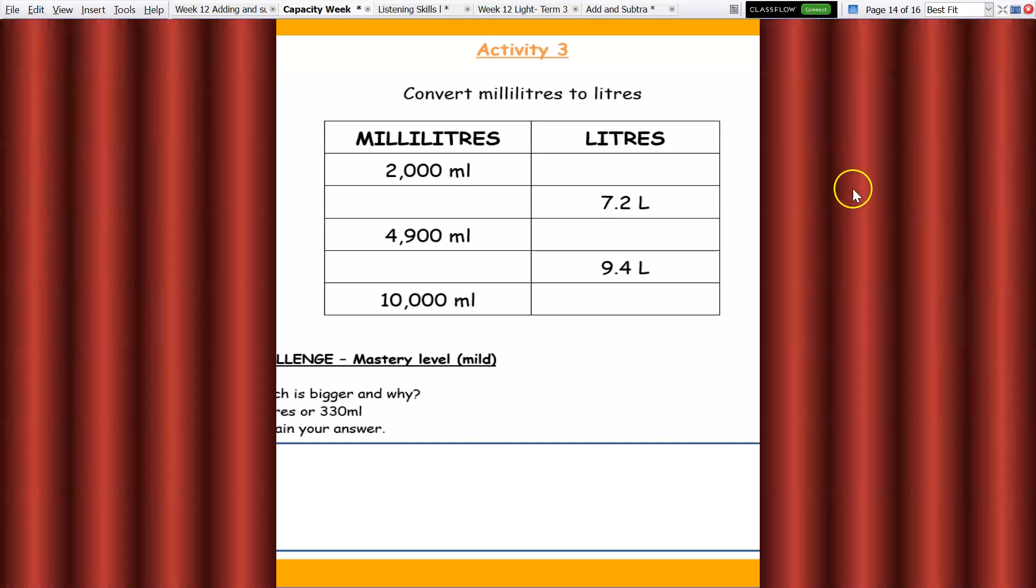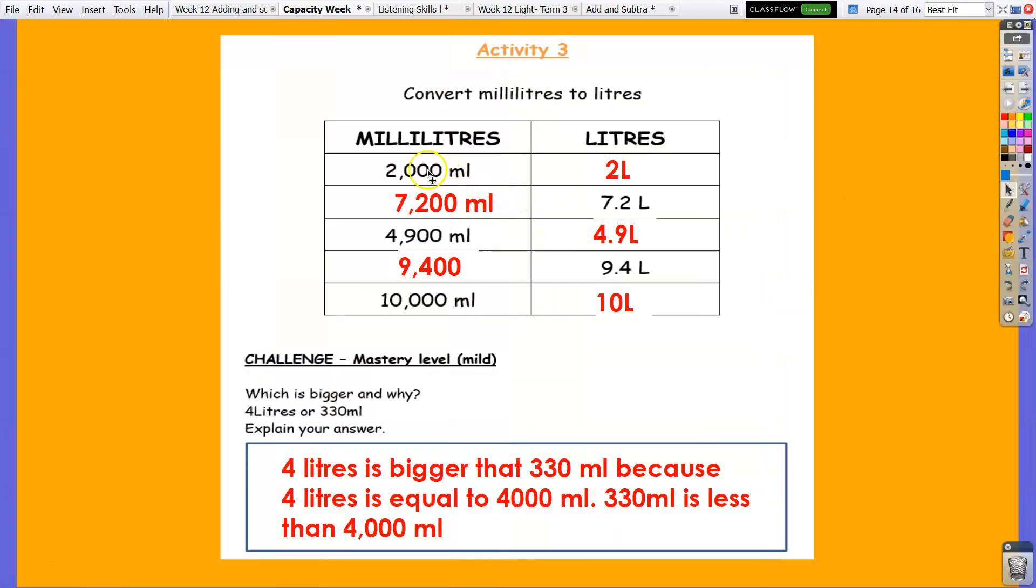Time is up. Here are the answers: for 2000 ml we have two liters. At this time it's the opposite—simply remove the three zeros if you are converting milliliters to liters. 7200 ml is equal to 7.2, 7900 ml is 4.9 liters, 9400 is equal to 9.4 liters, and 10,000 ml is 10 liters.